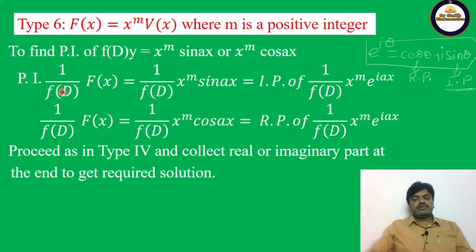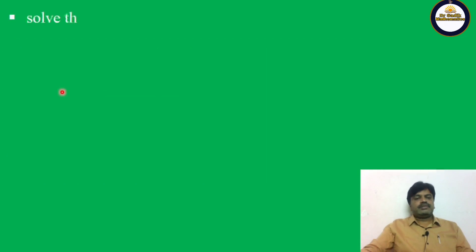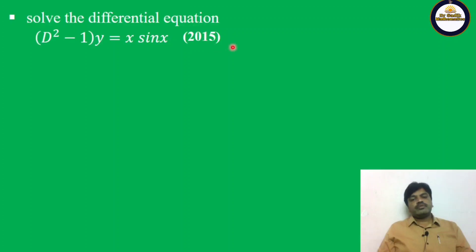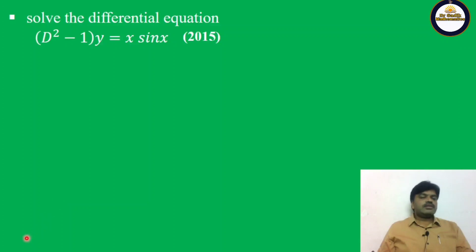Let us see one problem. Solve the differential equation (D² - 1)y = x·sinx. This one is also a previous year problem — very important. If you observe here, it is x·sinx, so this is Case 6.